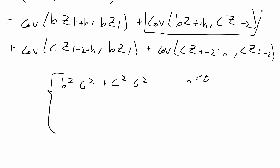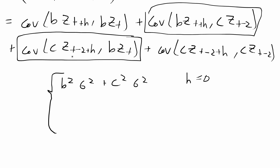The two middle terms are nonzero only when h equals plus or minus two. When h equals negative two, we get the covariance between b*z_{t-2} and c*z_{t-2}, which is b*c*σ². When h equals positive two, plugging into the other term gives c*z_t and b*z_t, again b*c*σ². The autocovariance is zero for any other lag that's not zero or plus or minus two.